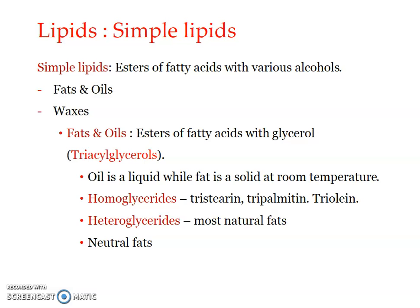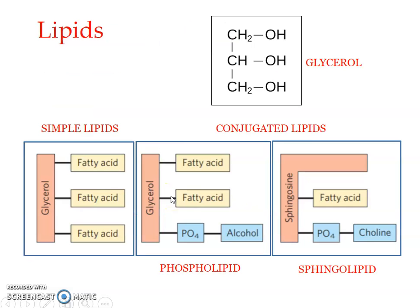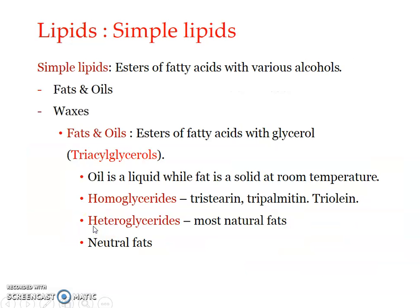Triacylglycerols are formed from a single glycerol molecule fully esterified with three fatty acid molecules linked to its three hydroxyl groups. When all three fatty acids are the same type, it is known as a homoglyceride. For example, tristearin — where all three fatty acids are stearic acid — is a homoglyceride. Similarly, tripalmitin (palmitic acid) and triolein (oleic acid) are homoglycerides.